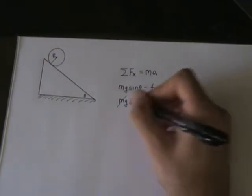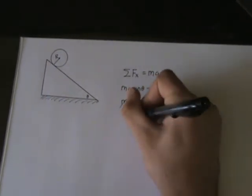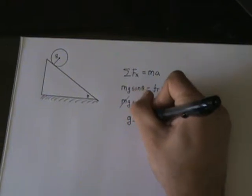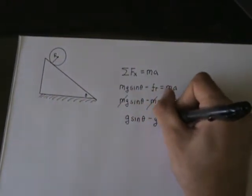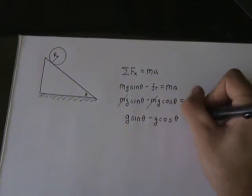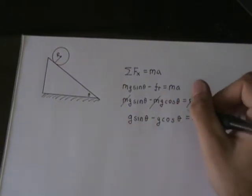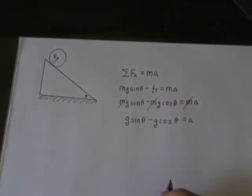We can cancel out the m's right here, and we get g sine theta minus g cosine theta is equal to a.